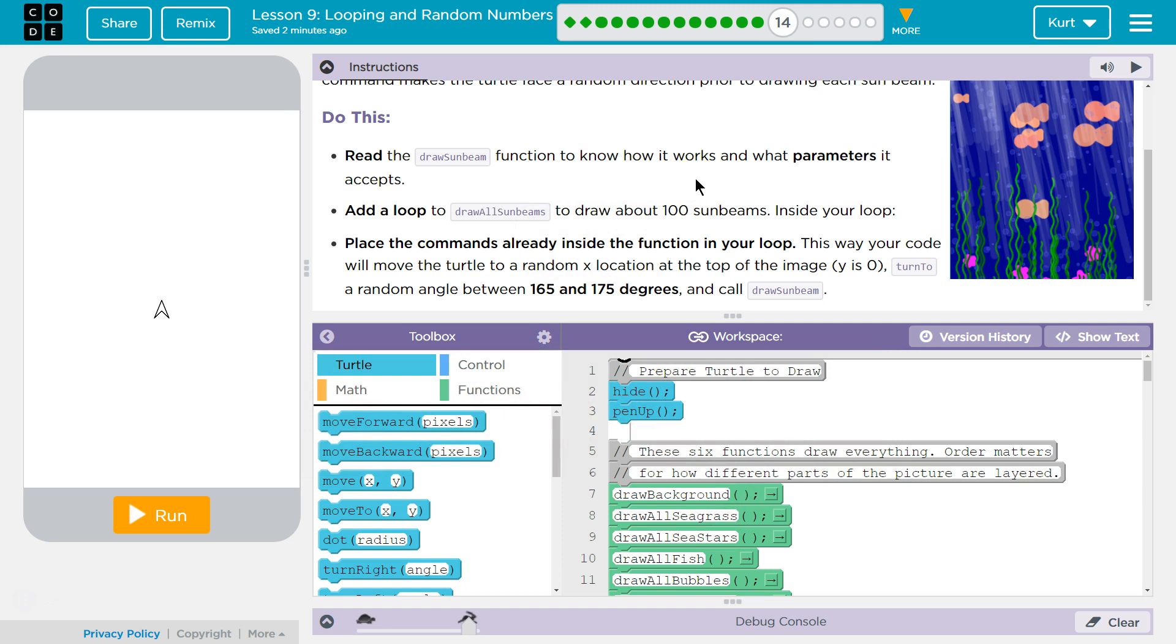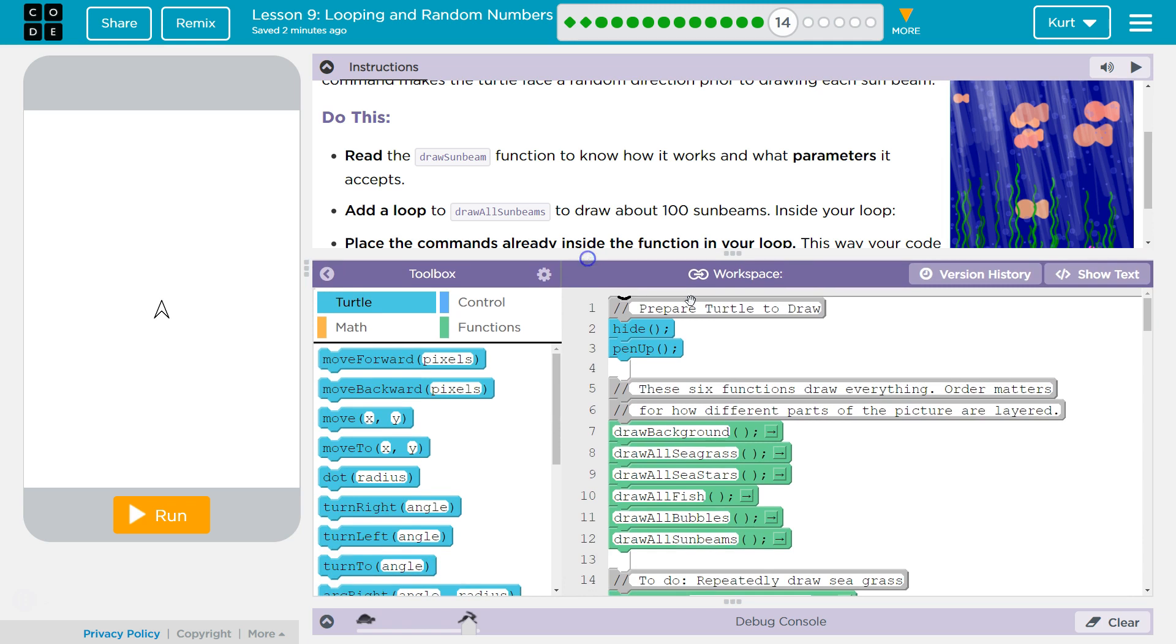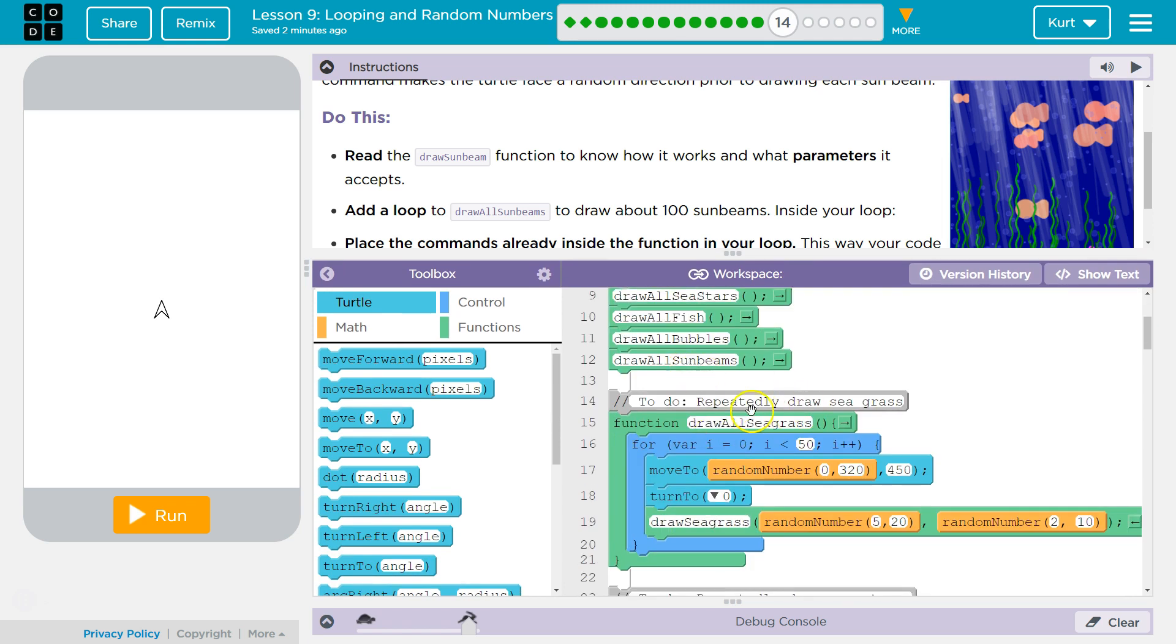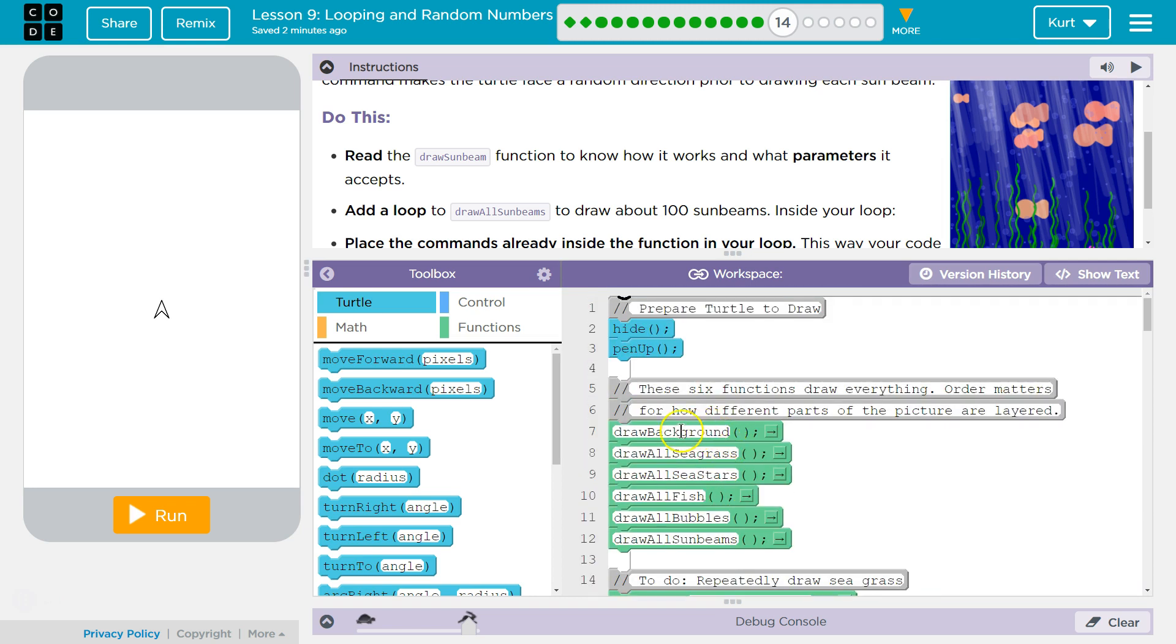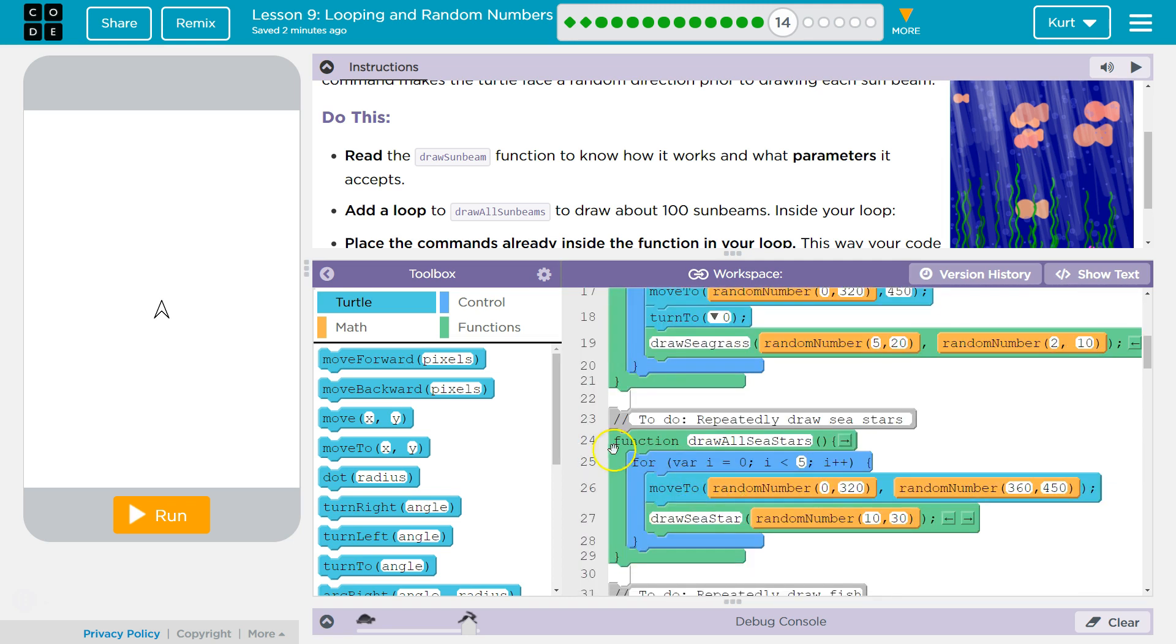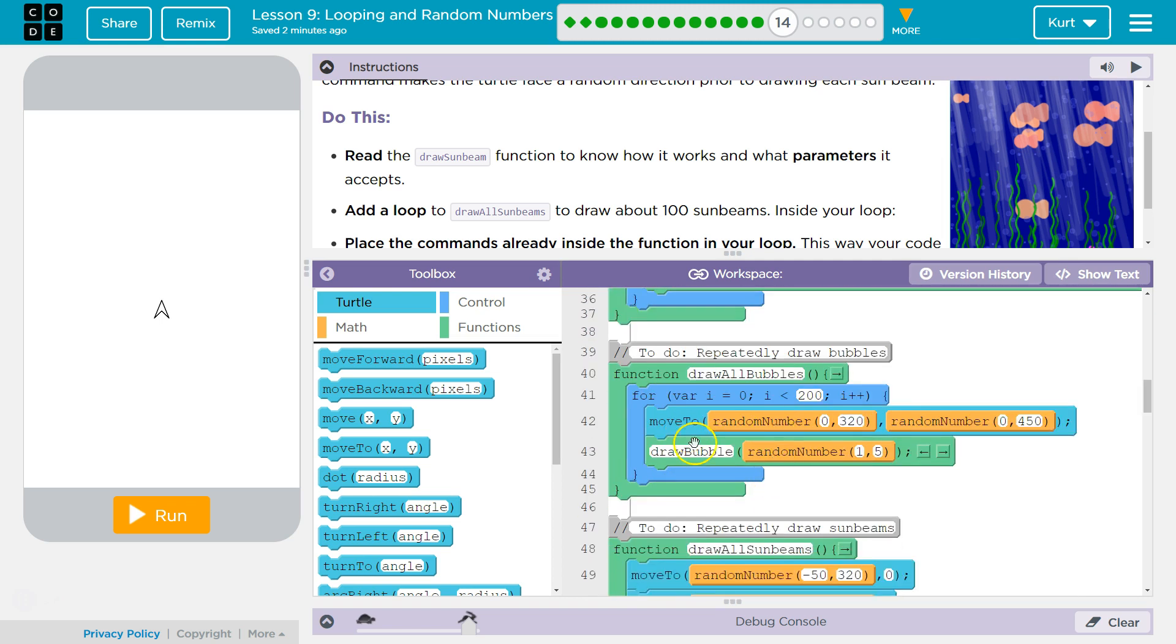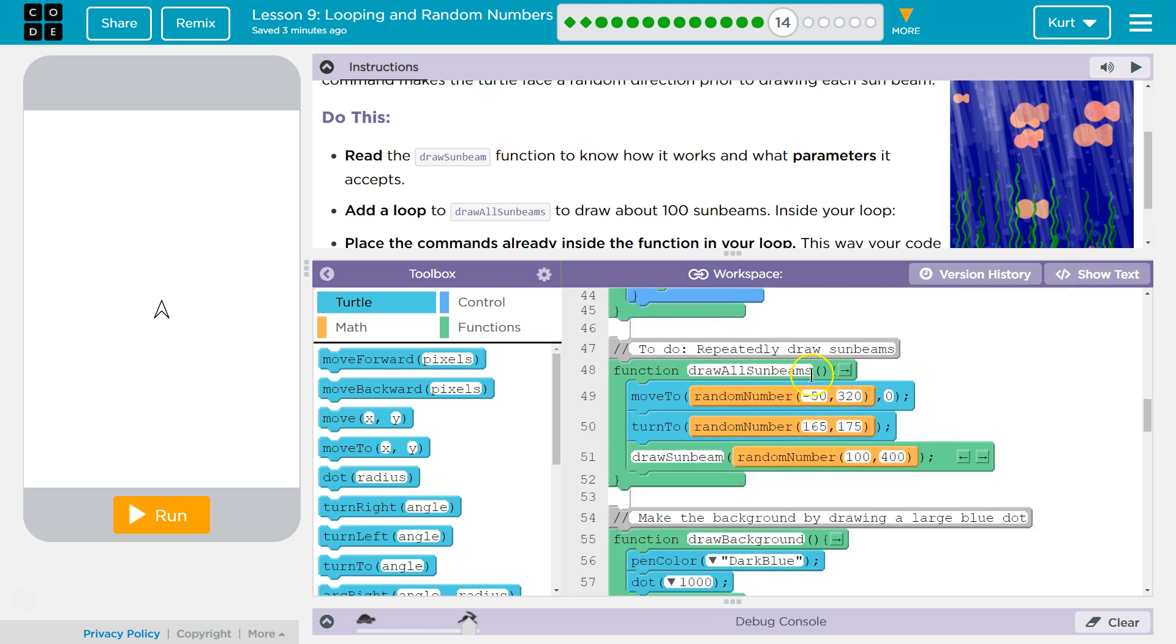Do this, read the draw sunbeam function to know how it works and the parameters it accepts. Remember, the code inside of here does not run on its own. You must call a function. This is what asks the computer to run them. We draw all sunbeams after we draw all bubbles. The computer is going to search for draw all sunbeams and finds this. It then drops in and runs the code inside.